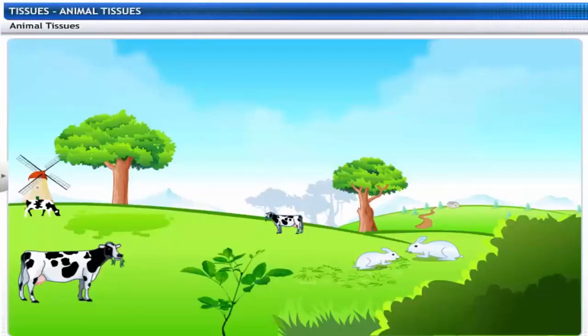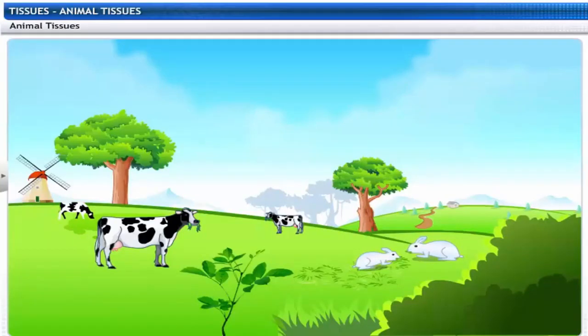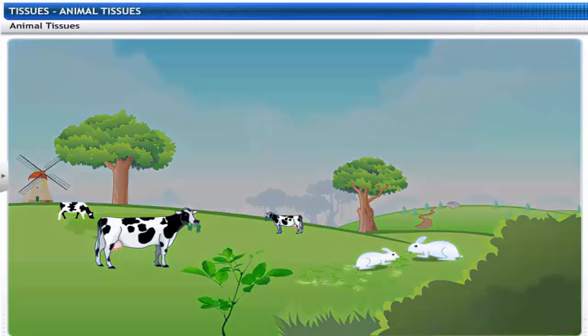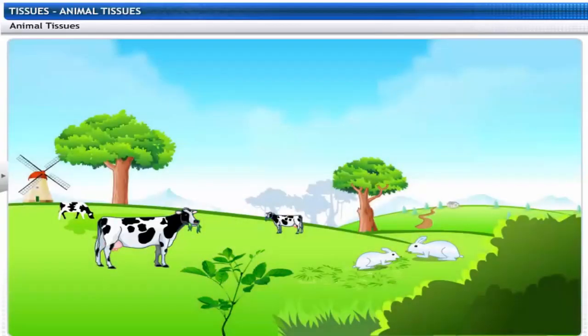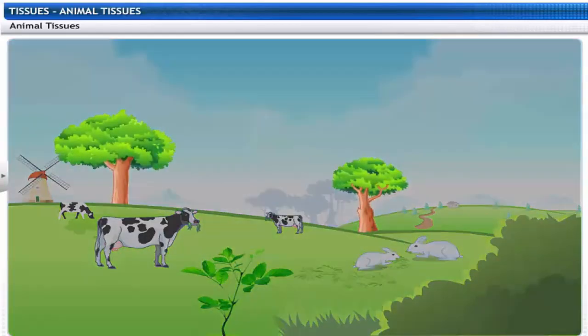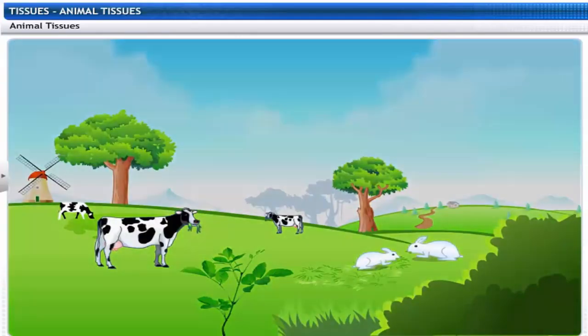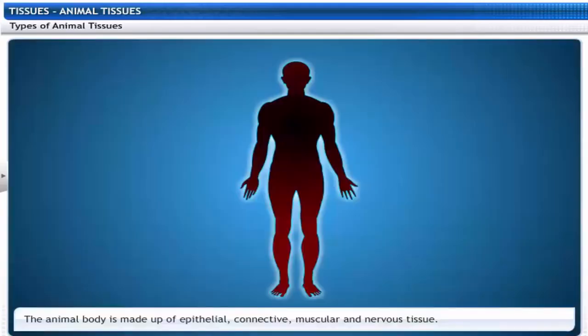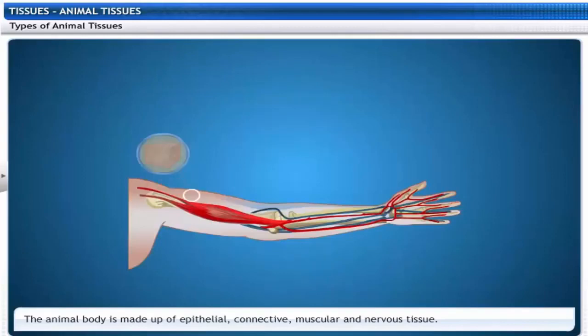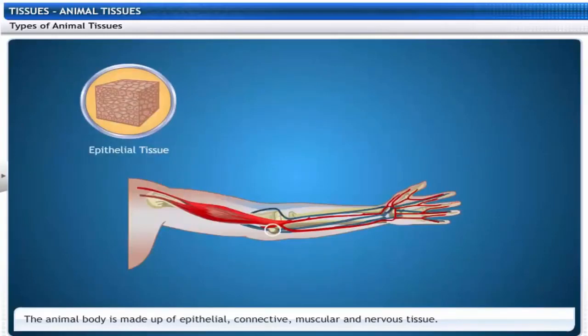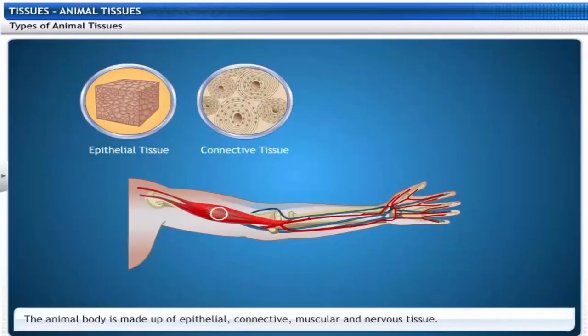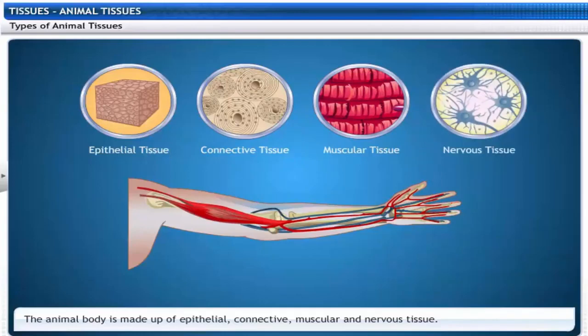Animals move around in search of food, shelter, and mates. They consume more energy compared to plants. So unlike plants, most animal tissues are living tissues. The animal body is made up of different types of tissues: epithelial tissue, connective tissue, muscular tissue, and nervous tissue. Let's look at each tissue in detail.